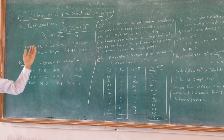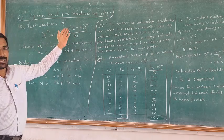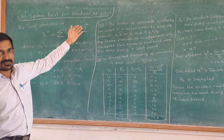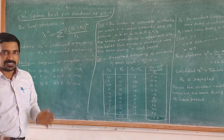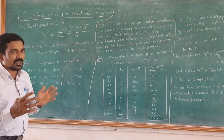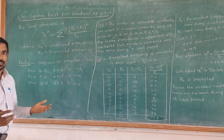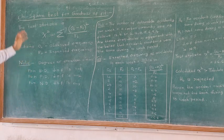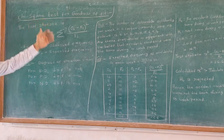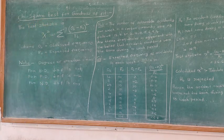We are going to observe the differences between the observed frequencies and the expected frequencies — whether they are equal or not equal. For that, we are going to be using the chi-square test function.